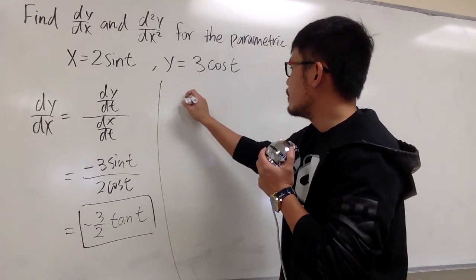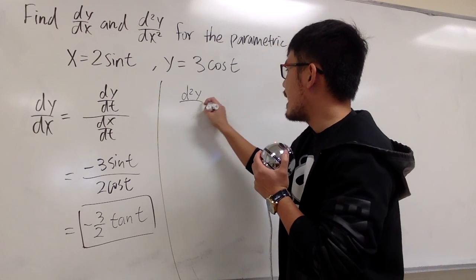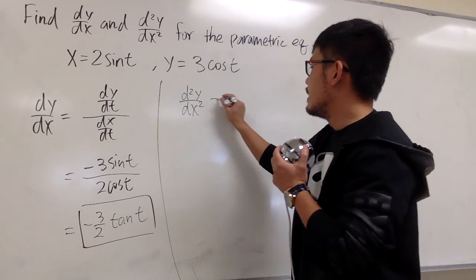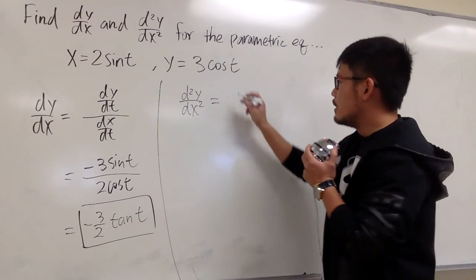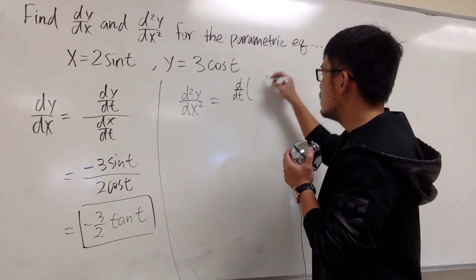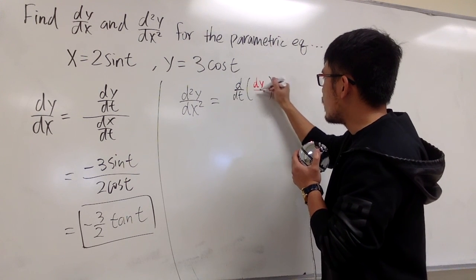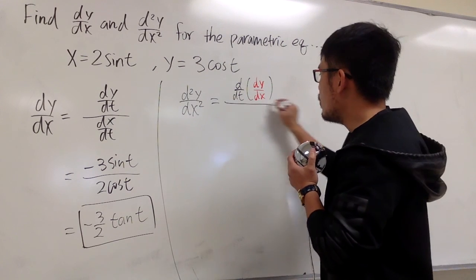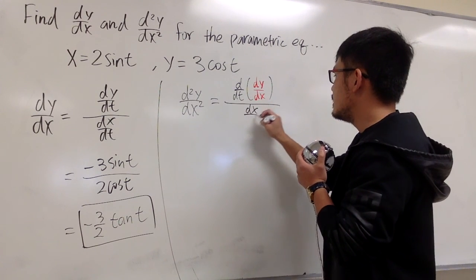And now, let's move on to d²y/dx². And to do this, remember we have to do d/dt of the first derivative, which is dy/dx right here, and then all over dx/dt.